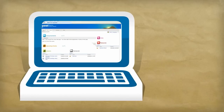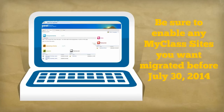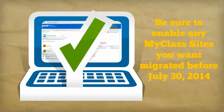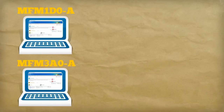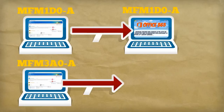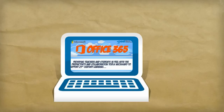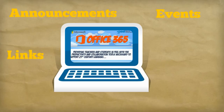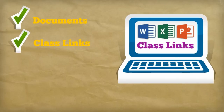If your MyClass site is currently disabled but you want your site to be migrated, please make sure it is available for public view before the last day of summer school. For each active MyClass site a teacher has, a new site will be automatically provisioned in the Office 365 environment. This new site will have all of the functionality of an existing MyClass site plus many new features. All of the existing documents and links will be migrated over to your new MyClass site.